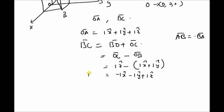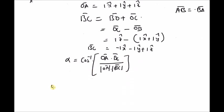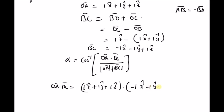Thus we have the vector OA = x̂ + ŷ + ẑ and the vector BC = −x̂ − ŷ + ẑ. The angle between OA and BC is cos⁻¹ of the dot product of OA with BC, divided by the magnitude of OA times the magnitude of BC. The dot product OA · BC equals the dot product of (x̂ + ŷ + ẑ) with (−x̂ − ŷ + ẑ).